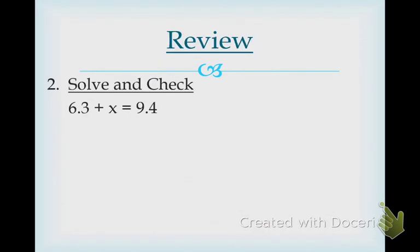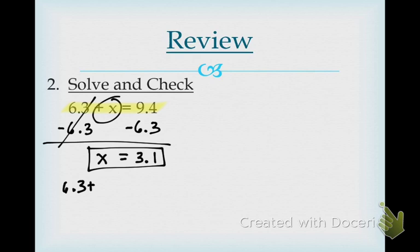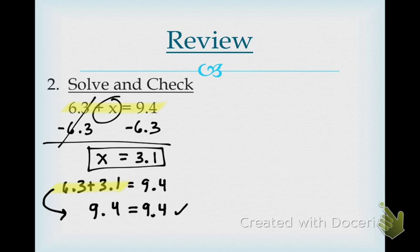In this problem, I'm trying to get the variable by itself. What is not allowing x to be alone? Add 6.3. What's the opposite of add 6.3? Subtract 6.3. What I do to one side, you must do to the other — this cancels out, and x equals 3.1. To check: 6.3 plus 3.1 equals 9.4, and 9.4 does equal 9.4.